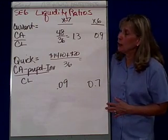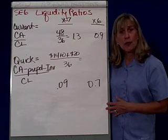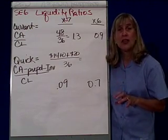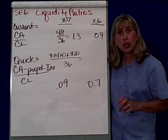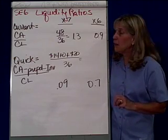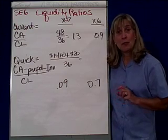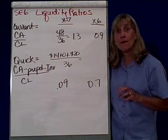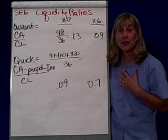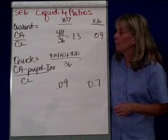The first one we want to look at is the current ratio. The current ratio is current assets divided by current liabilities. We want this to be greater than one because it shows that we have enough current assets to cover our current obligations — our responsibilities to others.